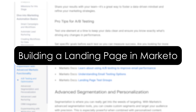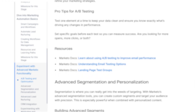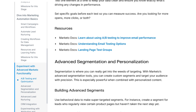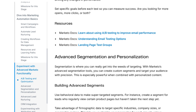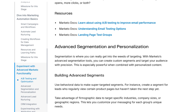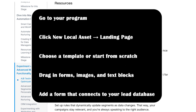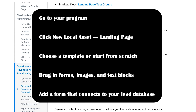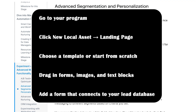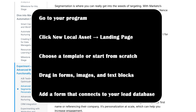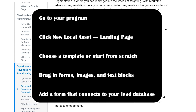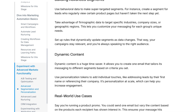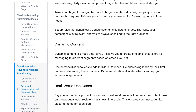Building a landing page in Marketo. Now let's quickly look at how to build a landing page. It's super useful for gated content, event signups, or lead captures. Go to your program, click New Local Asset, then Landing Page. Choose a template or start from scratch. Drag in forms, images, and text blocks with a form that connects to your lead database. Once you're happy with it, approve and activate, and you will get a shareable link to use in emails or ads.